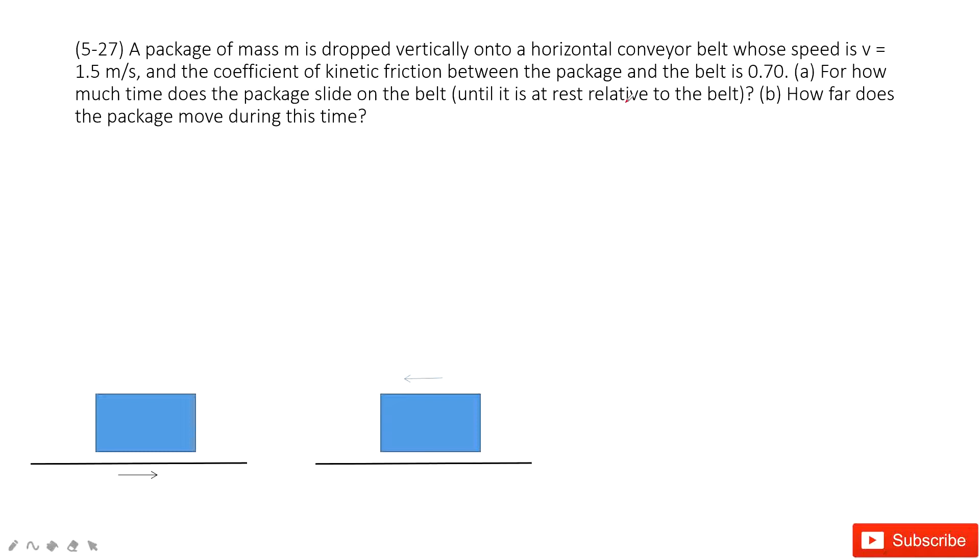For this one, we think we need to consider the relative motion. We can see because we need to solve the object, the package, it looks like we need to make sure the environment, the system is stationary. But this package is moving.